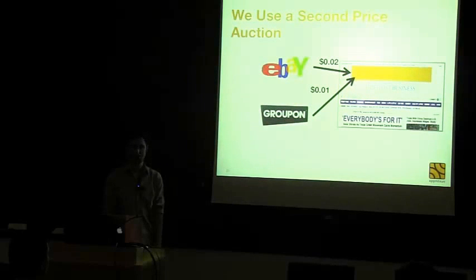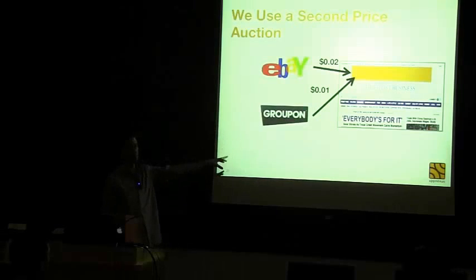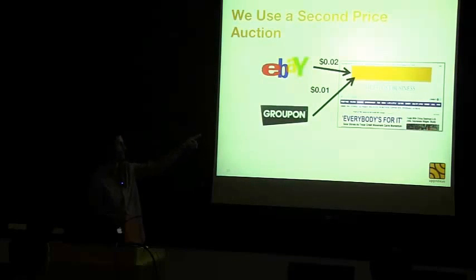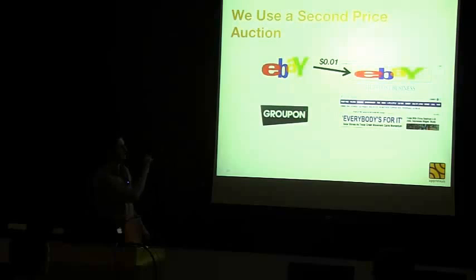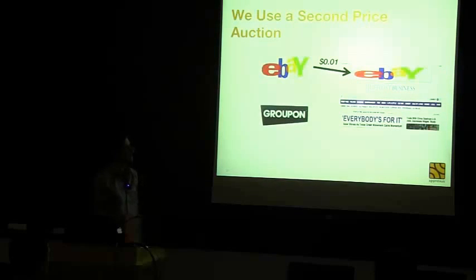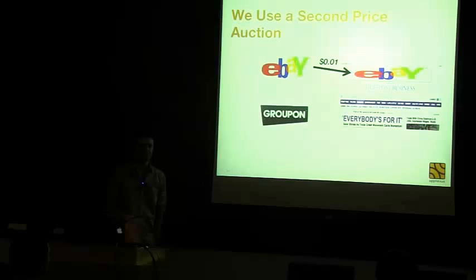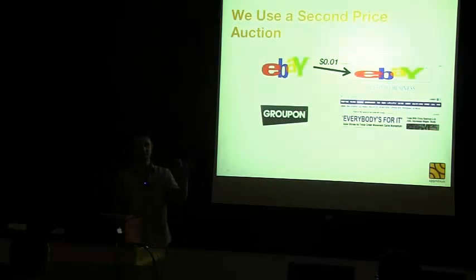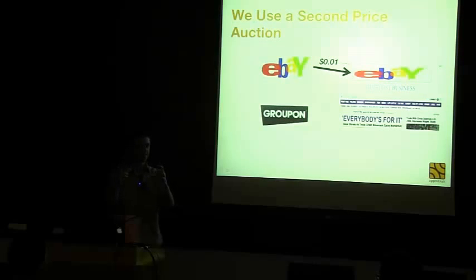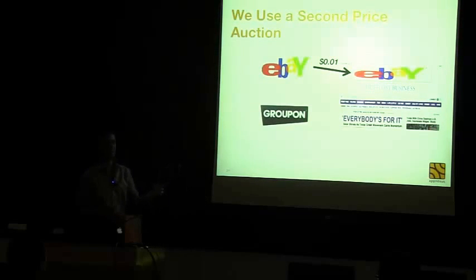We get bids back from all these different bidders, and they're all bidding based on what they know about the user. If you recently bought something from eBay, eBay might say this user has a higher propensity to buy, so we're going to bid more. We select the highest bidder. This basically replaces the phone — it's like real-time programmatic haggling. Just like Google AdWords, we use a second-price auction. A simple example: eBay bids two cents, Groupon bids a penny — eBay wins and shows their ad, but only pays a penny. We do this 30 billion times a day.